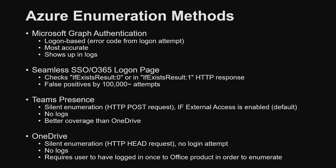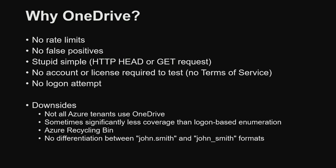There are a few different Azure enumeration methods. The Graph one has a logon attempt made and shows up in logs. Seamless SSO is quiet, but gives false positives. There's Teams presence, but you need external access enabled. And then there's OneDrive — no rate limits, no false positives, simple, easy to script. You could even use DirBuster if you wanted to do the same type of enumeration.